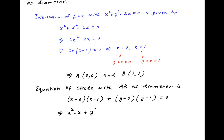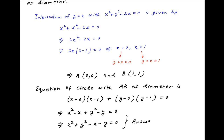This simplifies to x² - x + y² - y = 0, which can be written as x² + y² - x - y = 0, which is the required answer.